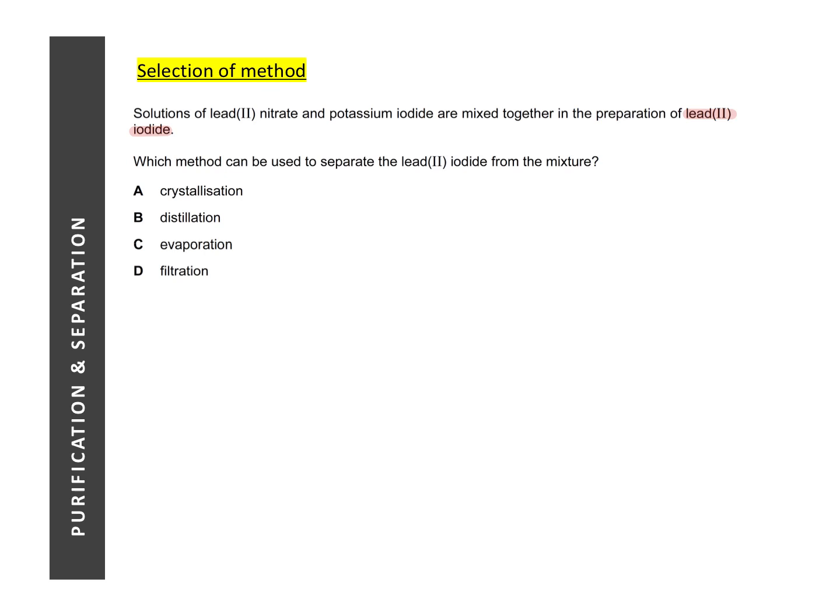In this question, it's talking about the preparation of lead(II) iodide. For this question, it actually requires you to apply some concept that you will learn in the solubility of salts. When you come to that chapter, you will learn that lead(II) iodide is actually insoluble. So essentially, in order to separate lead(II) iodide from the mixture, we are looking at a solid and liquid mixture. So the method that we need to use is a very simple one and it's that of filtration.